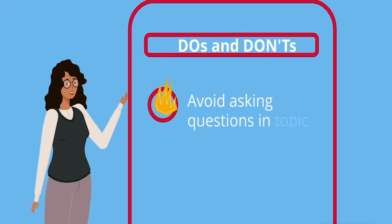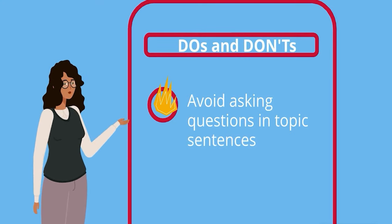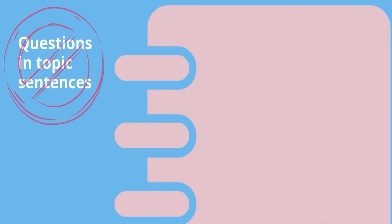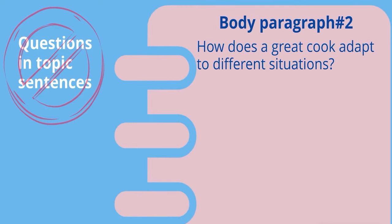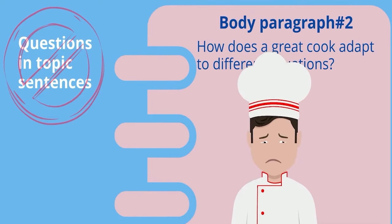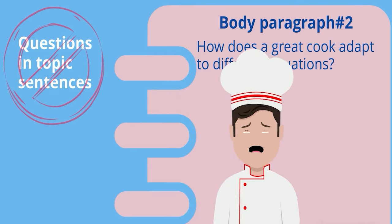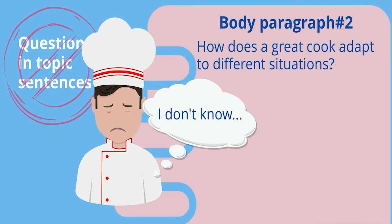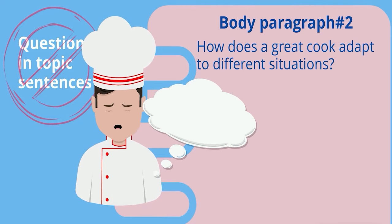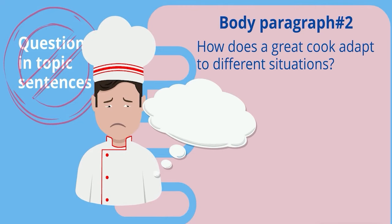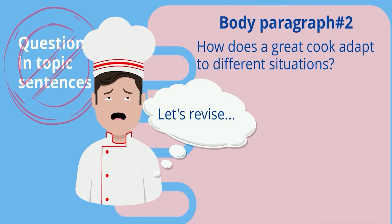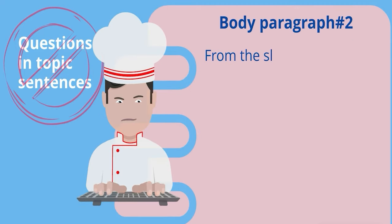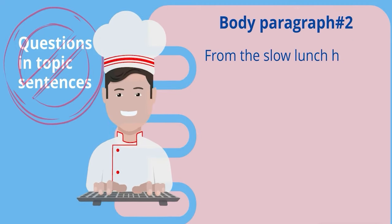Another tip is to avoid asking questions in topic sentences. Questions make the reader wonder about the answer, which doesn't help your reader understand the main point right away. They may understand the topic you're introducing, but not your stance on that topic. Therefore, instead of asking questions like 'how does a great cook adapt to different situations,' give your answer and make that the topic sentence.